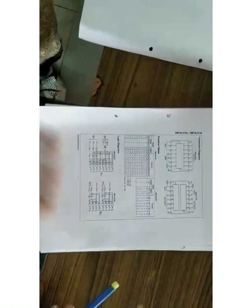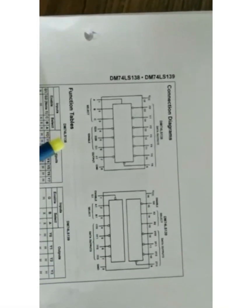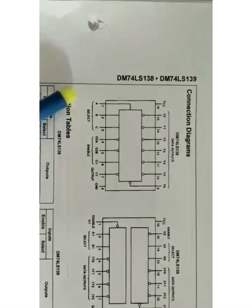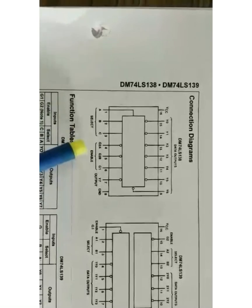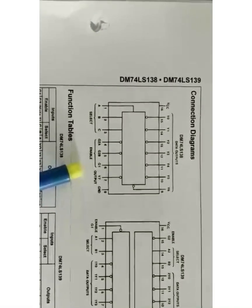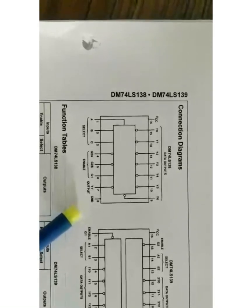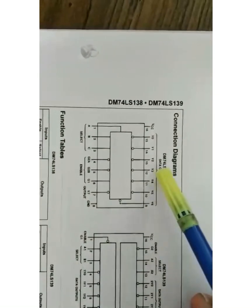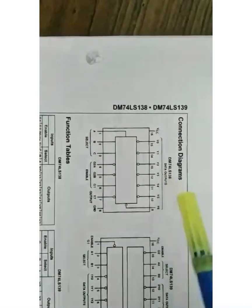Now we will see the pin diagram of 74138. In the pin diagram, pin number 1, 2, and 3 are select inputs A, B, and C. Pin number 4, 5, and 6 are the enable inputs. Enable inputs are used as switches. Pin number 7 is an output pin, pin number 8 is ground, and pins 9 through 15 are output pins. Pin 16 is VCC.